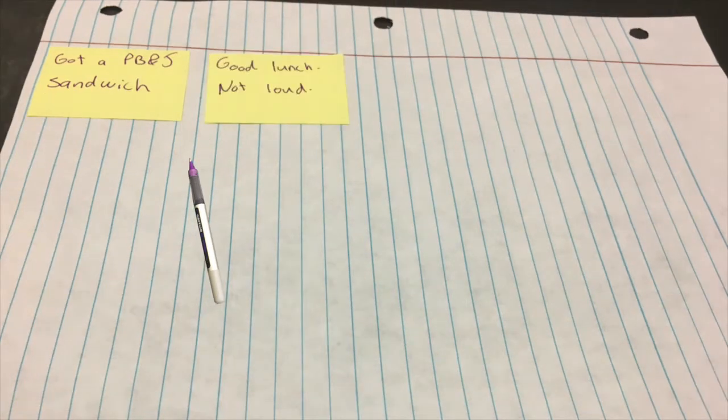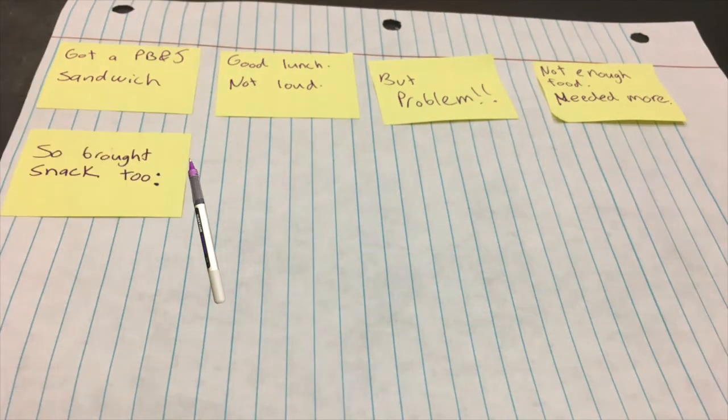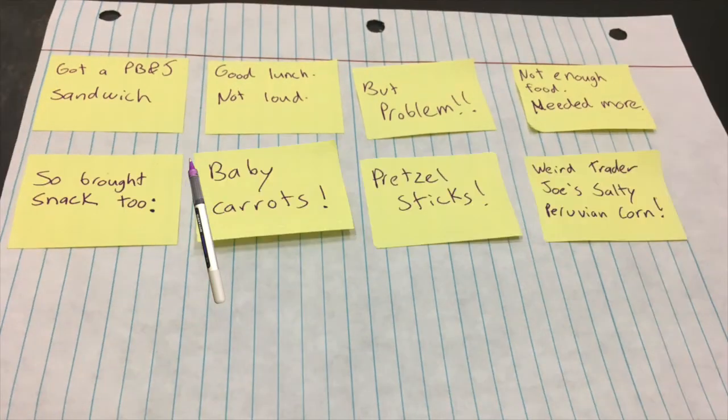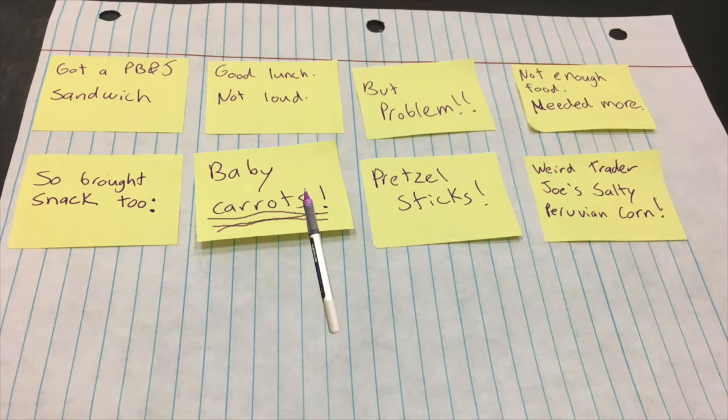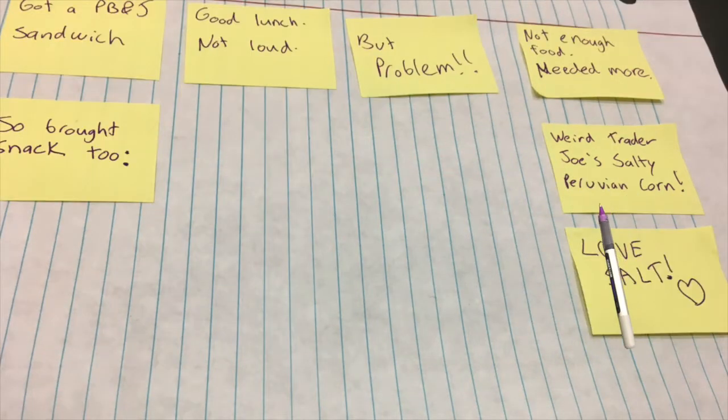I got a peanut butter and jelly sandwich. Good lunch, not loud. But problem. Not enough food, needed more. So brought snack too. Baby carrots, pretzel sticks, weird Trader Joe's salty Peruvian corn. Oh, I get to choose. Weird Trader Joe's salty Peruvian corn.